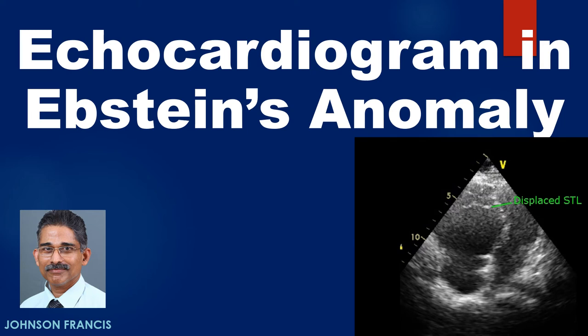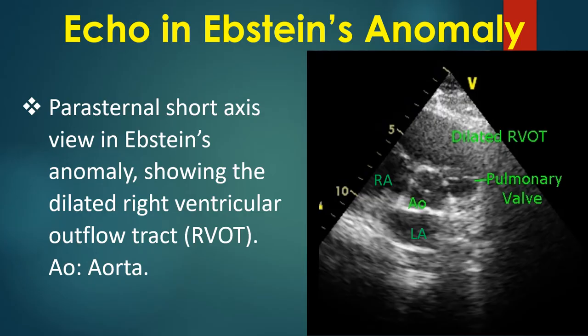Discussion on echocardiogram in Epstein's anomaly of the tricuspid valve. Parasternal short axis view showing the dilated right ventricular outflow tract. Labeled structures include AO (aorta), LA (left atrium), and RI (right atrium).